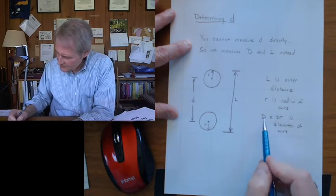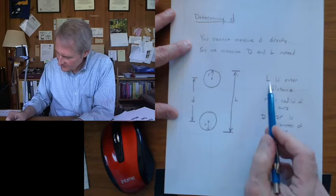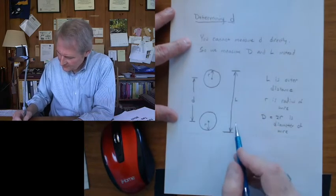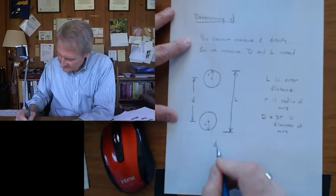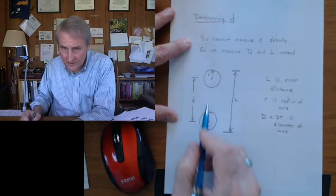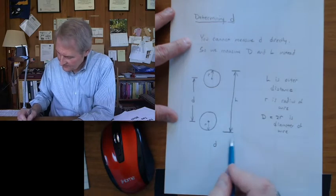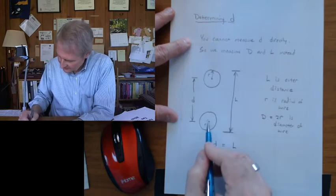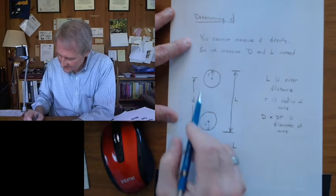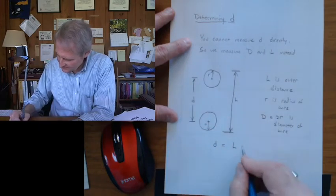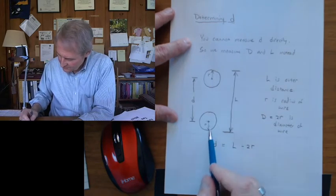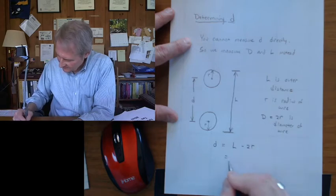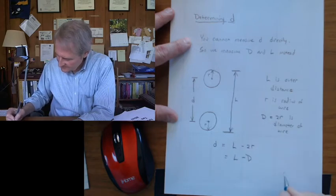So we can measure capital D, and we know R. We can measure L, and we want to know little d. And so you can see from this diagram that little d, the distance center to center between the wires, is big L, take away R, take away the radius here, this half of the diameter, and then take the top part and half the diameter, so minus 2R. But twice the radius is the diameter of the wire, capital D, so minus D.